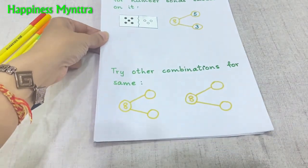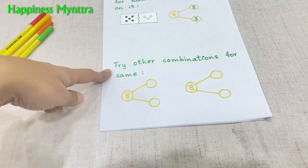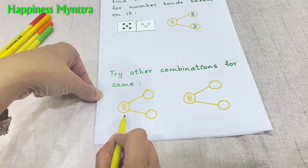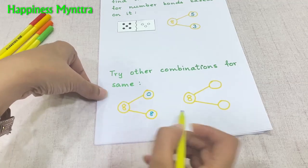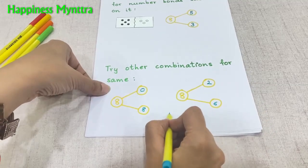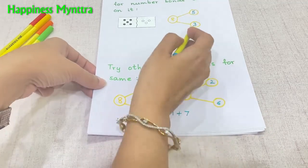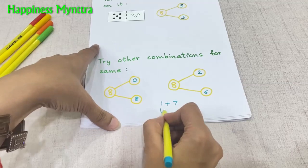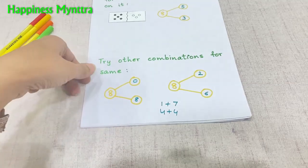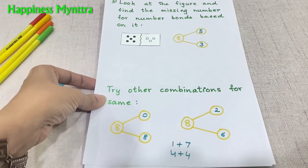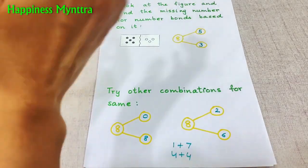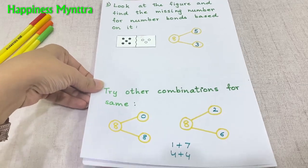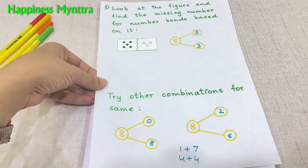I like to extend this problem and have children form their own combinations of these same numbers. For 8, they can have any kind of number combination — they could write 0 plus 8, 2 plus 6, 1 plus 7, and 4 plus 4 would be another combination. Understanding how two numbers can reach the same answer is very important in the concept of addition, so understanding number bonds becomes very essential.